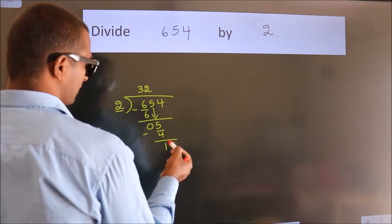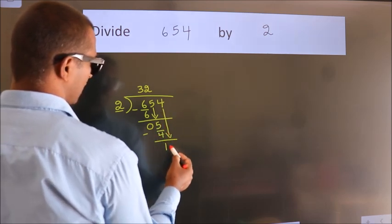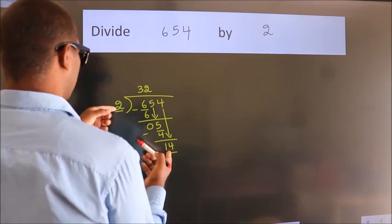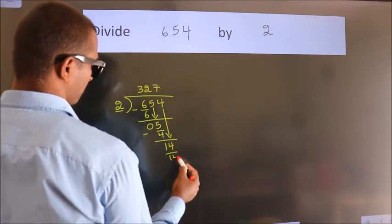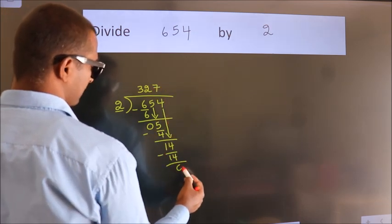After this, bring down the beside number. So 4 down. So 14. When do we get 14 in the 2 table? 2 times 7 is 14. Now we subtract. We get 0.